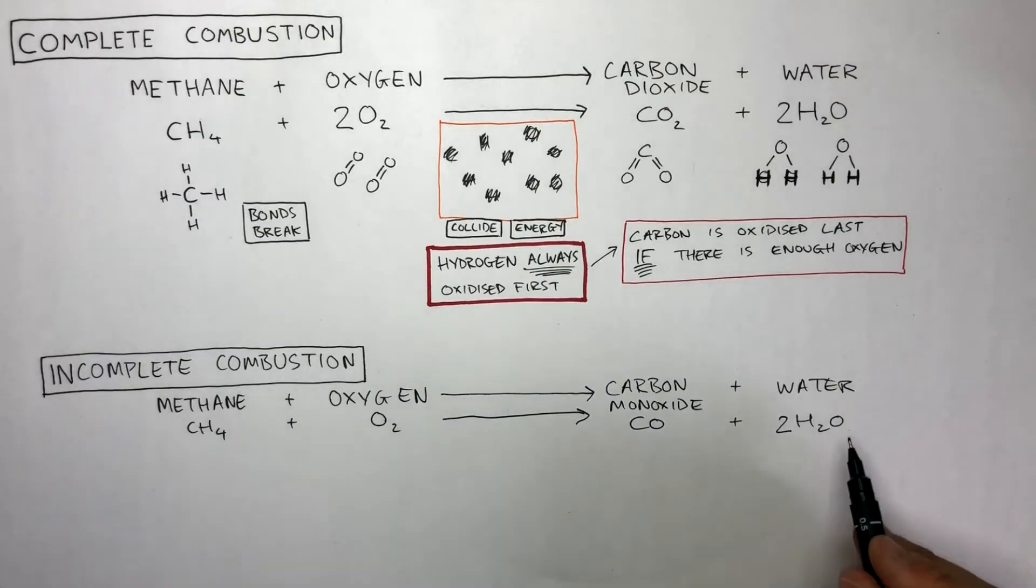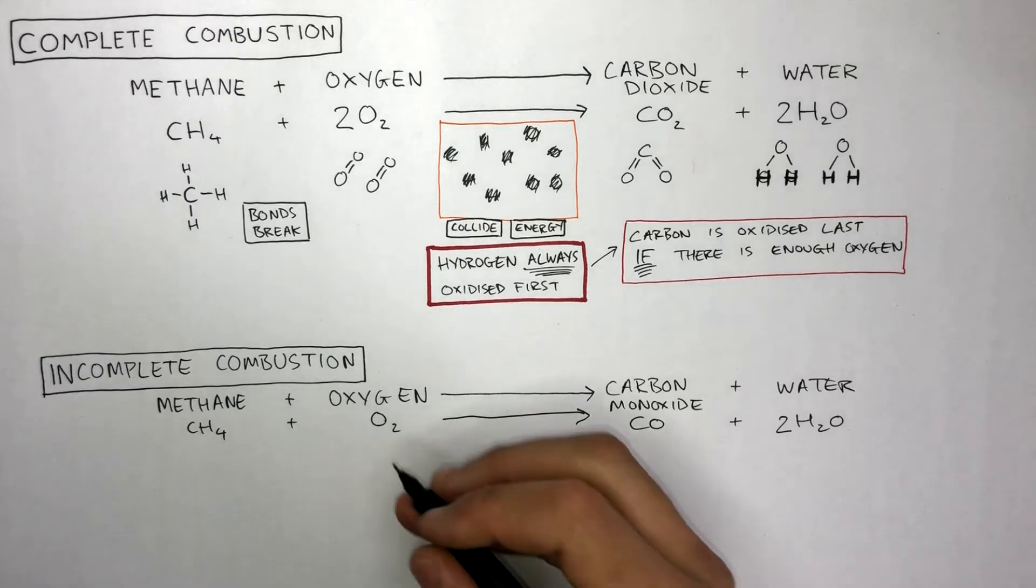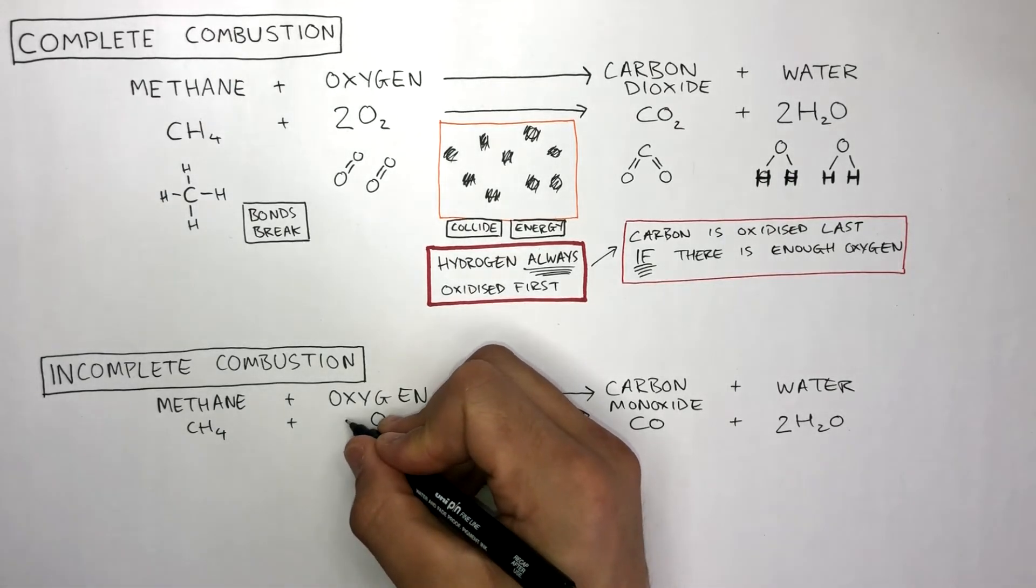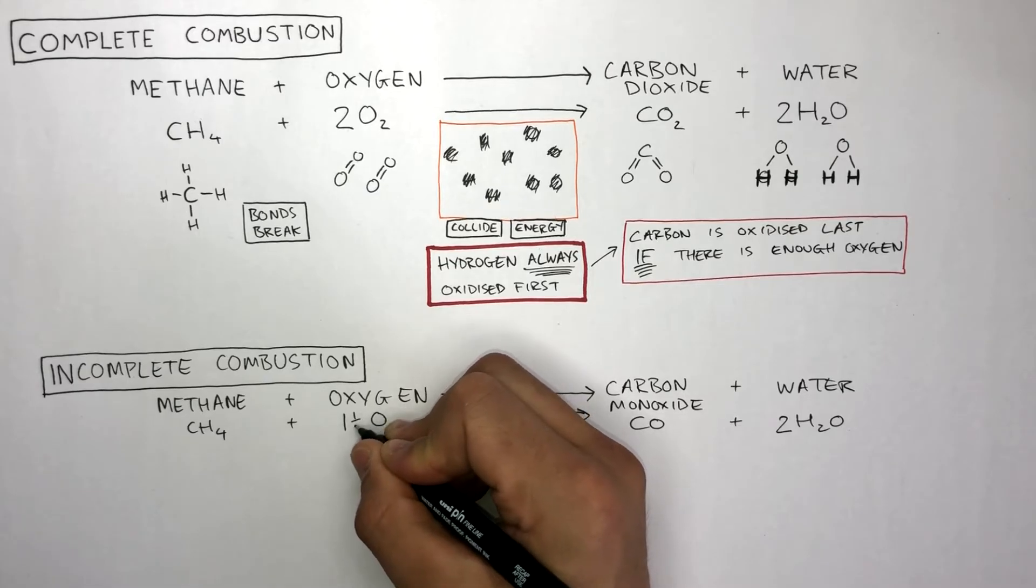There are three oxygens on the right and two on the left. Therefore, we put one and a half to multiply the two by the one and a half to make it equal three on the left as well.